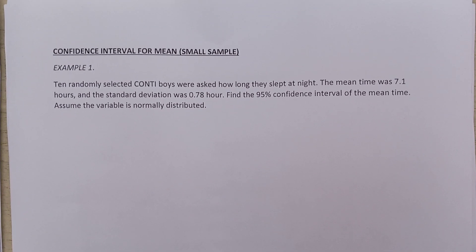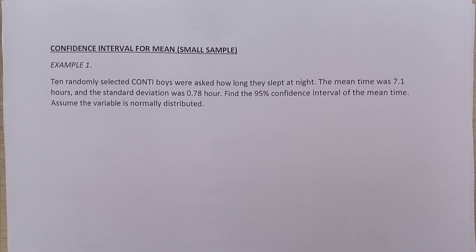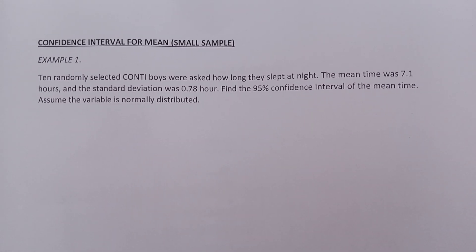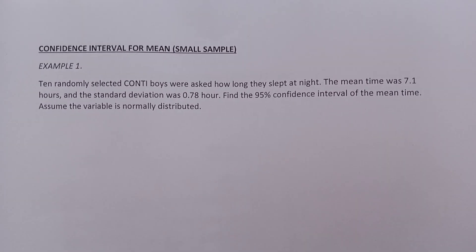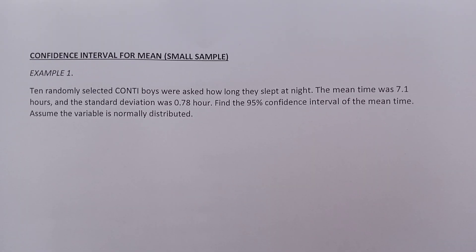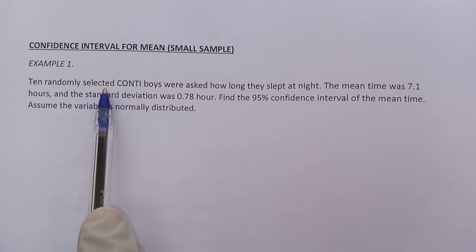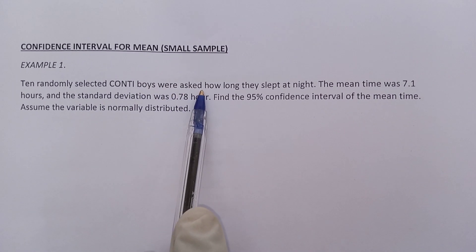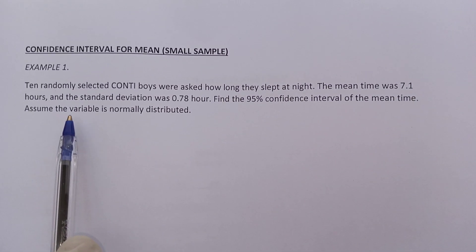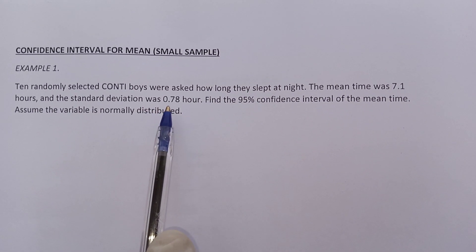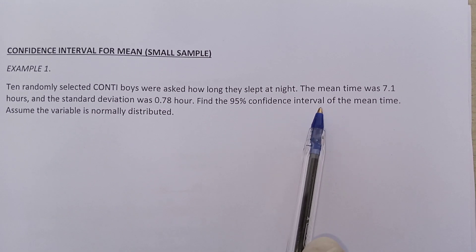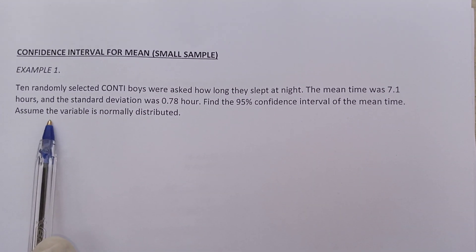Welcome. In this lesson we are going to look at confidence interval for mean for small sample. Let's quickly read the question to understand what makes it a small sample question. Ten randomly selected country boys were asked how long they slept at night. The mean time was 7.1 hours and the standard deviation was 0.78 hours. Find a 95% confidence interval for the mean time, and assume the variable is normally distributed.